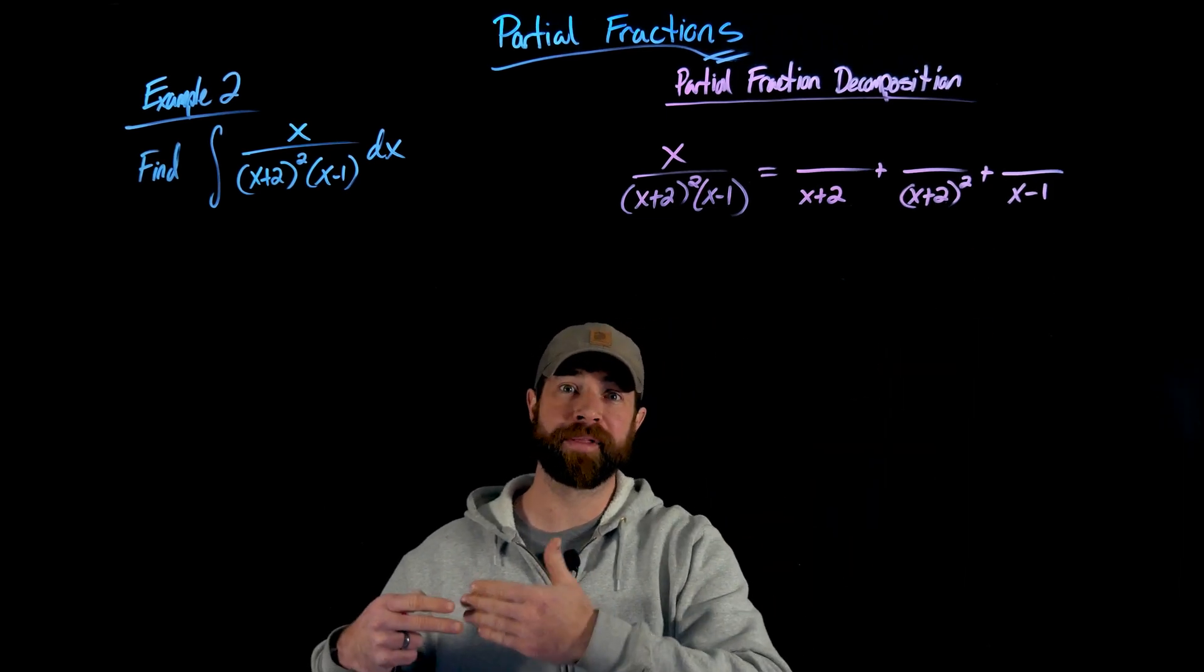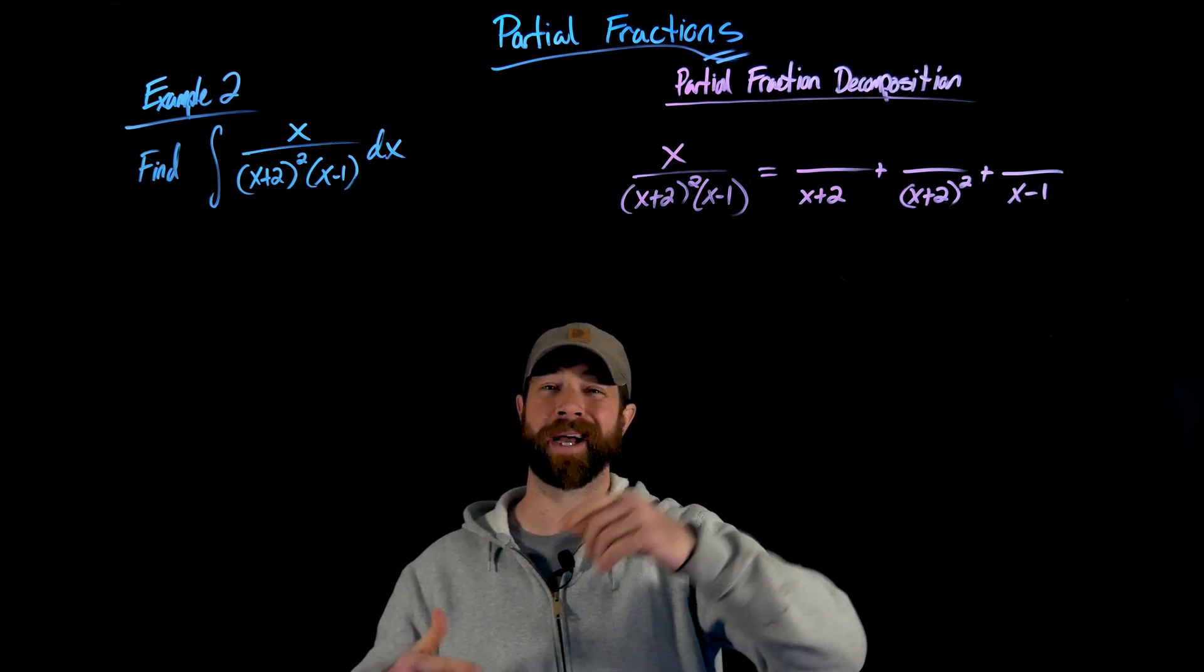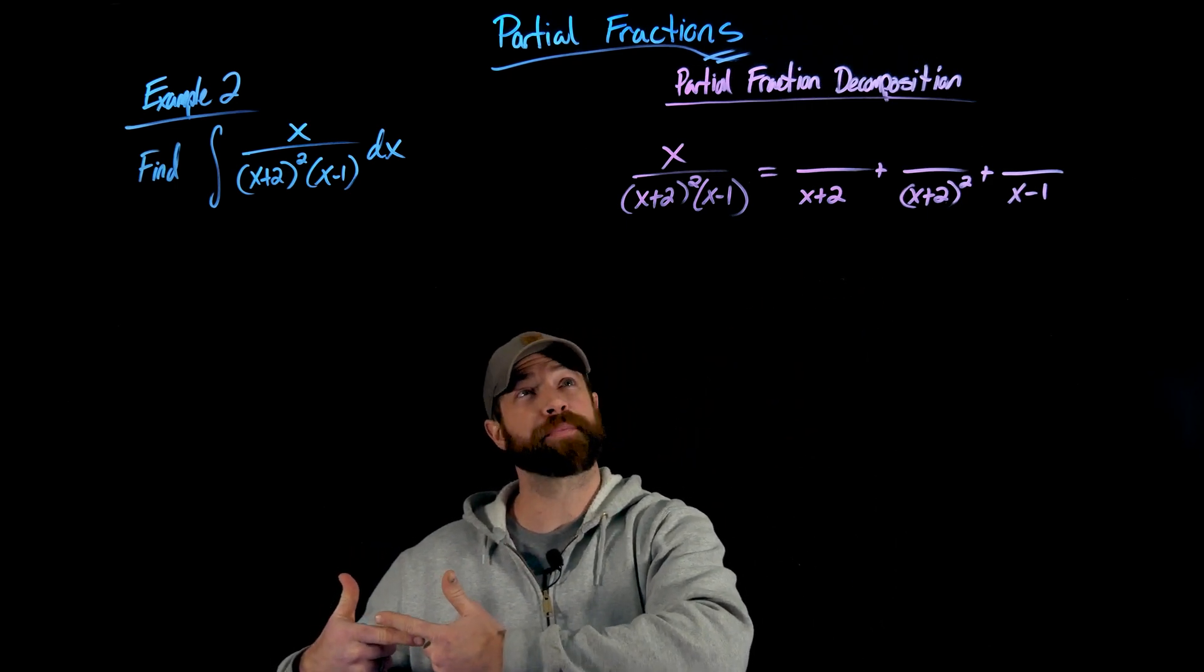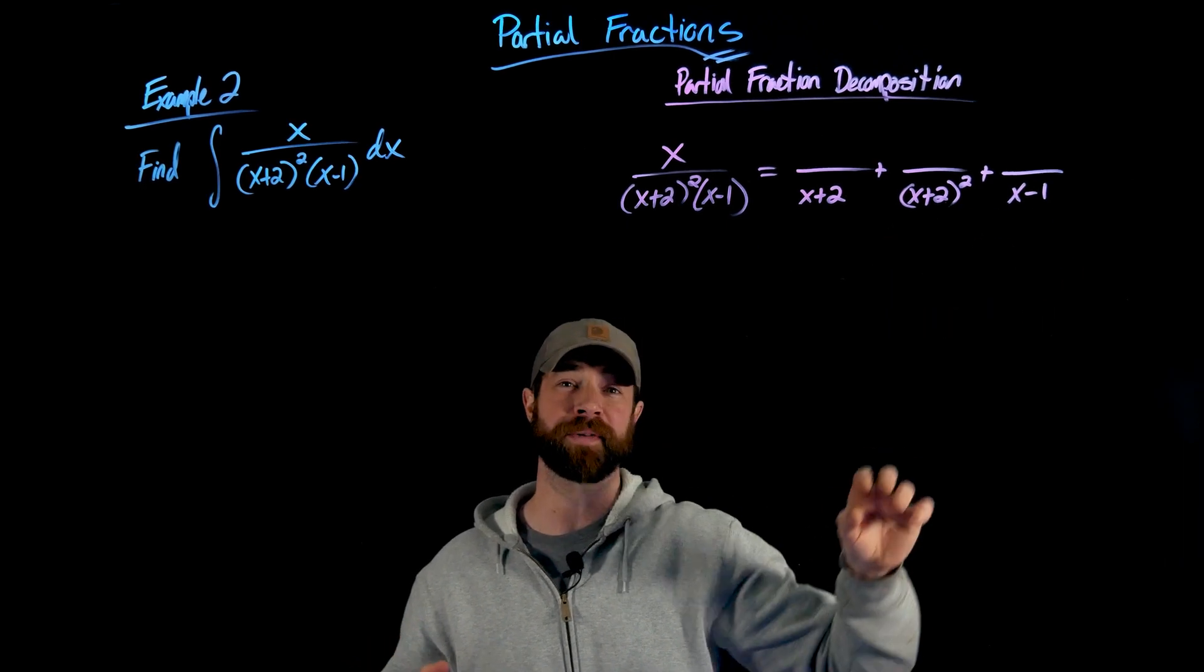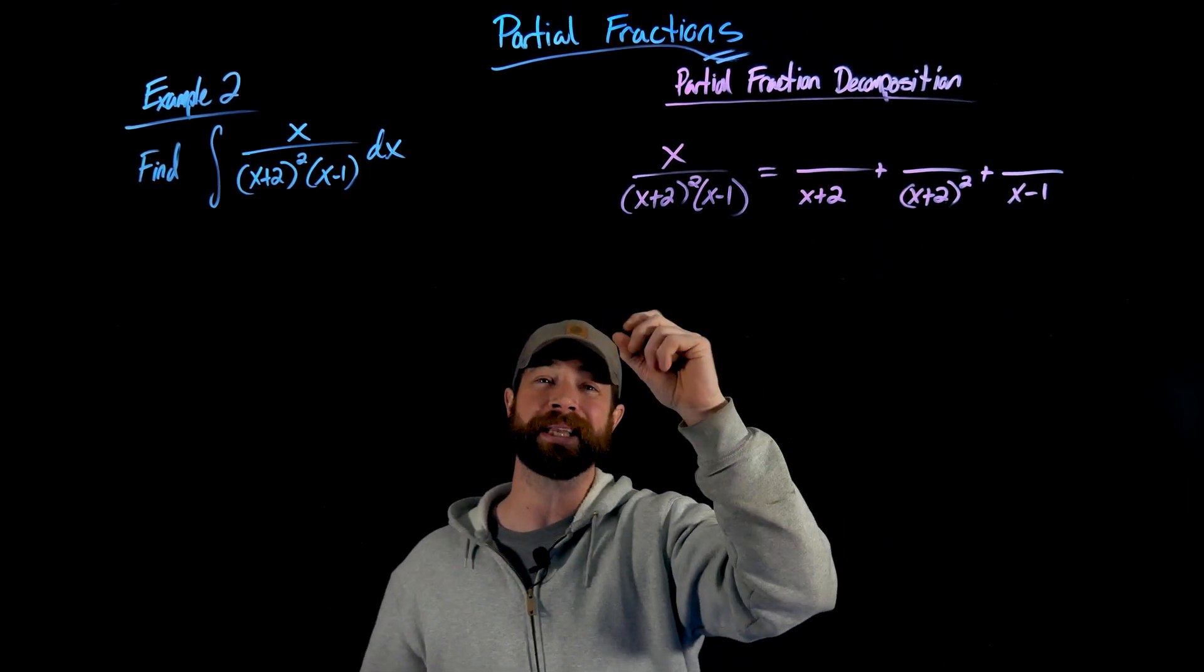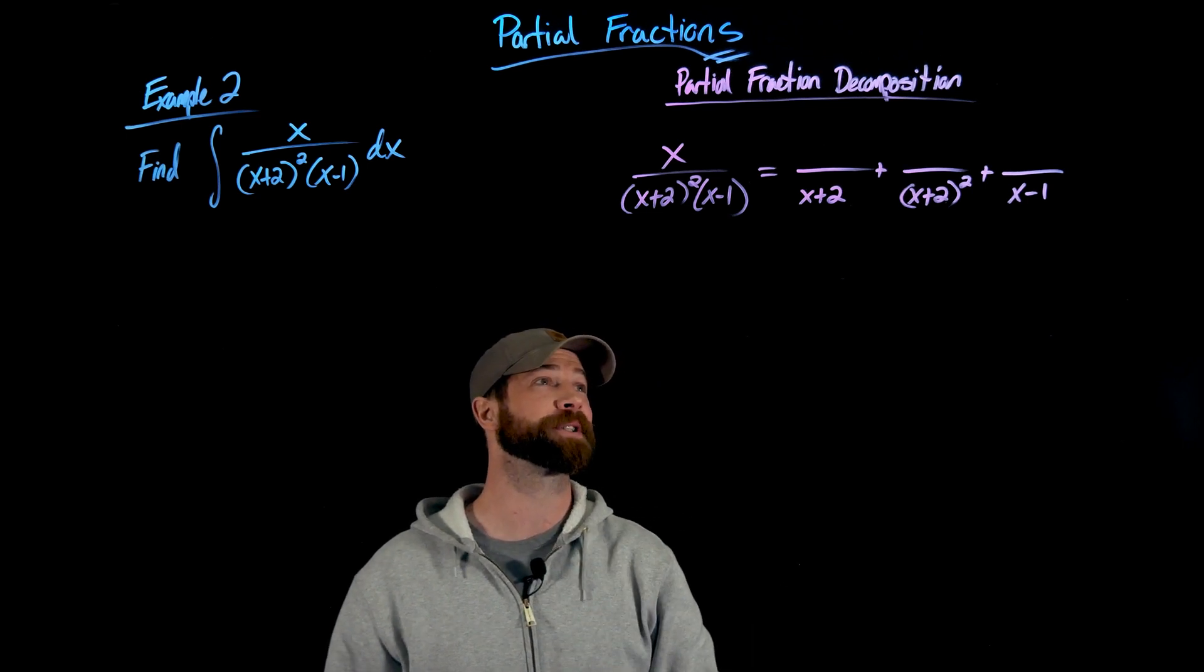Again, to say, if I had three independent factors, I would just write those out, right? If I had like an x plus 5, x plus 2, and x minus 1, I would have a term for each of those. This is how you deal with it if you have this duplicated linear term here, in this case, x plus 2.